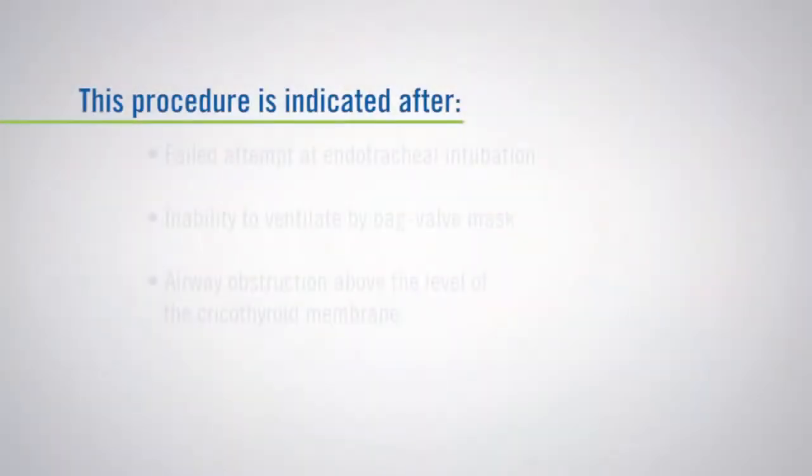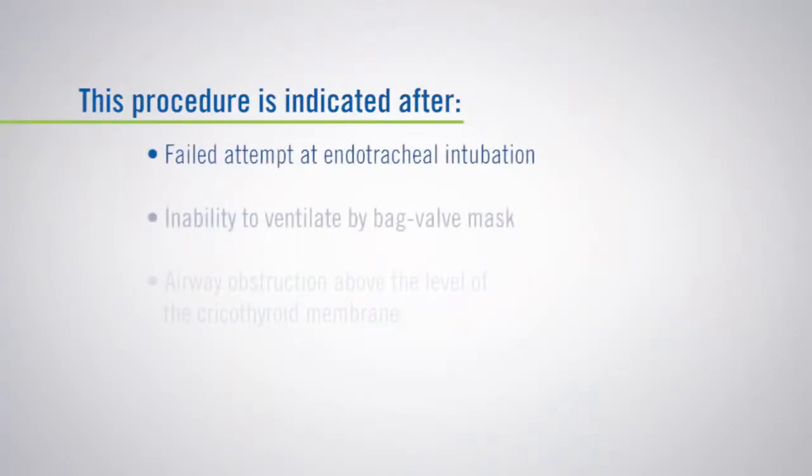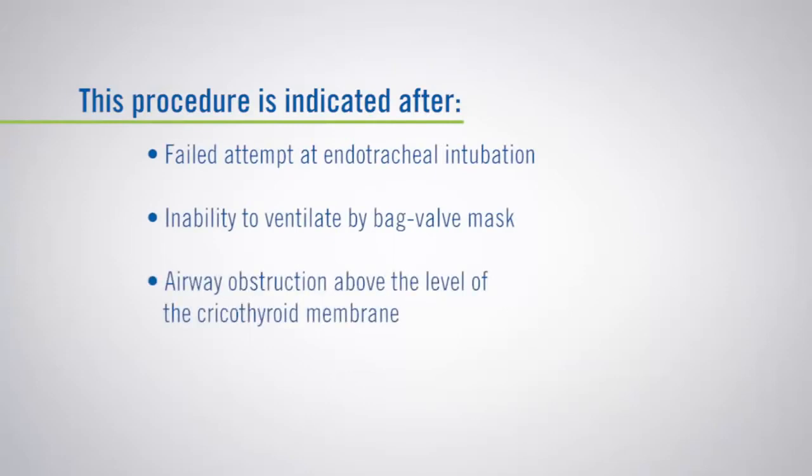This is the indication for the needle cricothyroidotomy. Let's review the indications. Needle cricothyroidotomy is the preferred method for securing the airway in the crash airway situation for infants and young children. A surgical cricothyroidotomy is contraindicated in this population due to the small size of the cricothyroid membrane. More specifically, this procedure is indicated after failed attempts at endotracheal intubation, the inability to ventilate by bag valve mask, or airway obstruction above the level of the cricothyroid membrane.